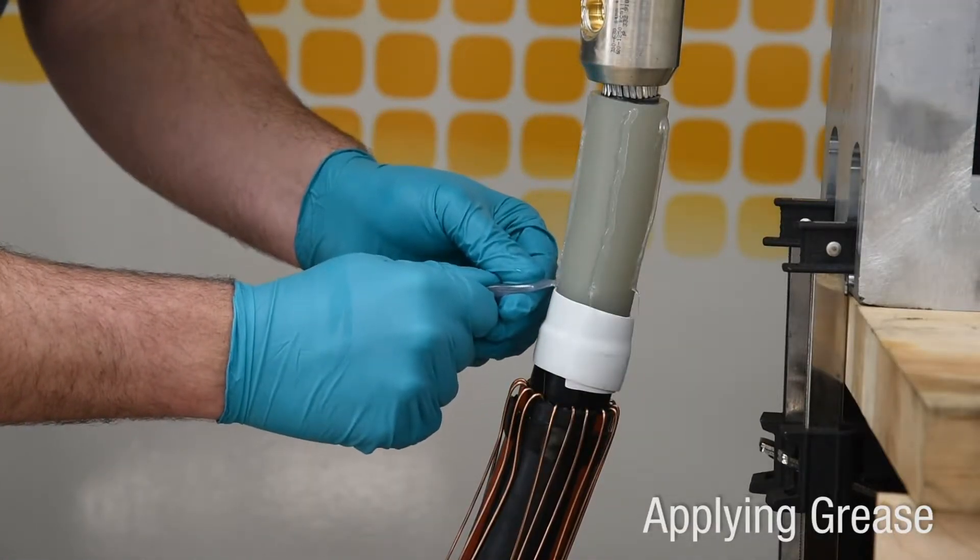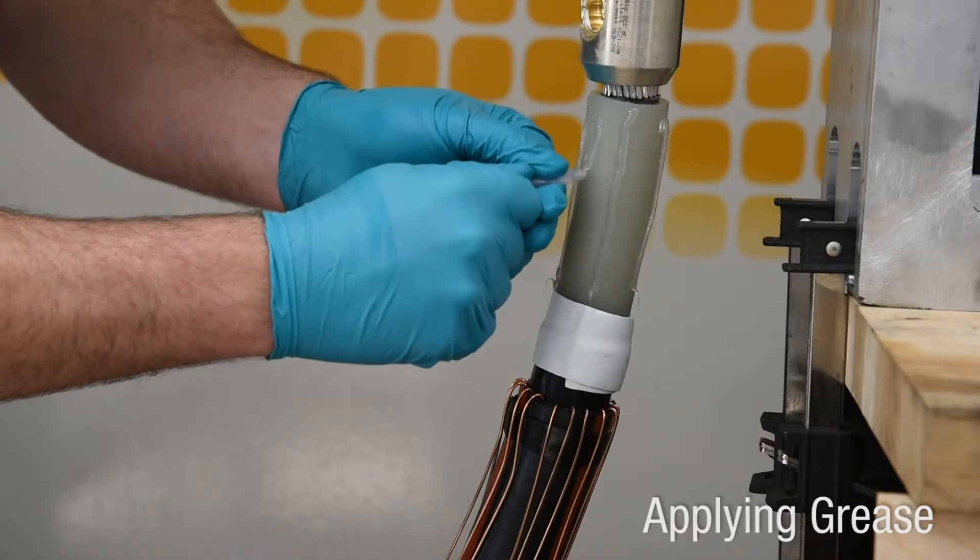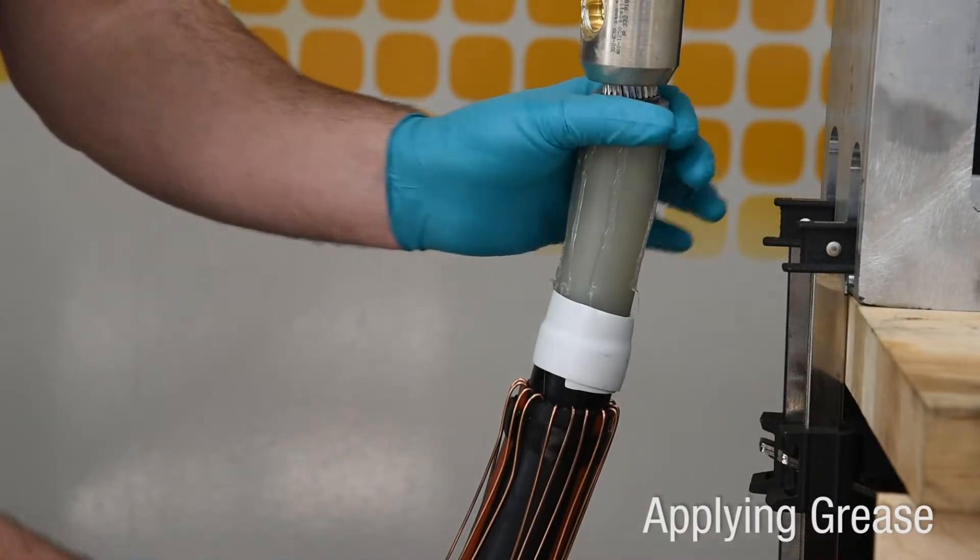Apply grease over exposed insulation and stress control mastic with approved or supplied silicone grease.